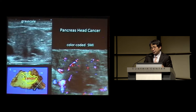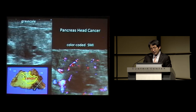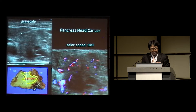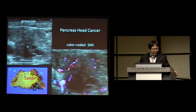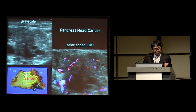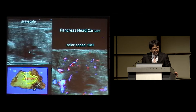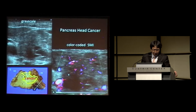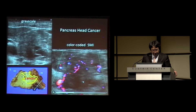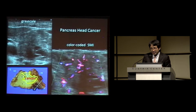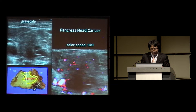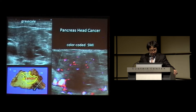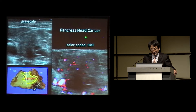SMI can also be used the other way around to detect or diagnose tumors. This is a case of pancreatic cancer. On grayscale, you cannot be really sure about the diagnosis or even the presence of the tumor — you could only say this area is a little hypoechoic. Color-coded SMI revealed that this area is quite hypovascular, which is the nature of pancreatic cancer, strongly suggesting the diagnosis. We confirmed it by fine needle aspiration and surgical operation.